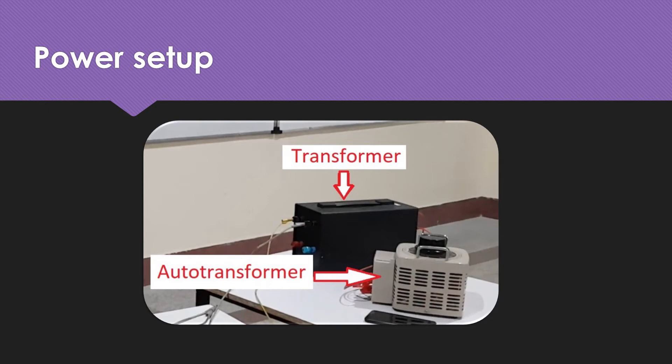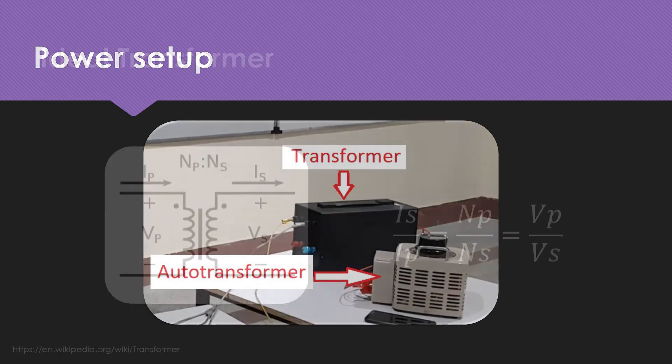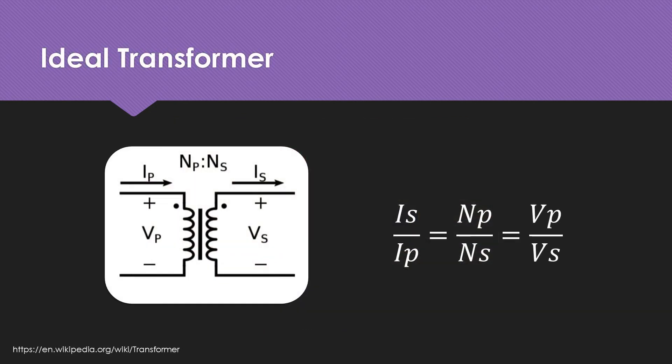To AC power the coil, we have used a transformer and an auto transformer. The transformer helps us to change the voltage and the current level. The formula of an ideal transformer is on the right side. This formula shows the relation between voltage, current, and number of turns of primary and secondary of the transformer.